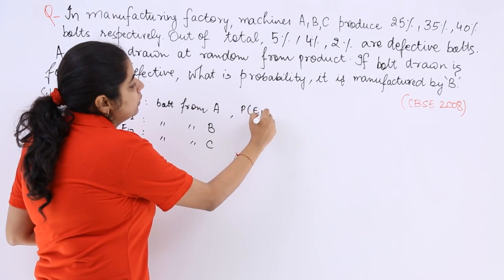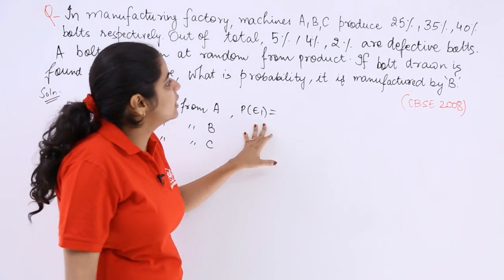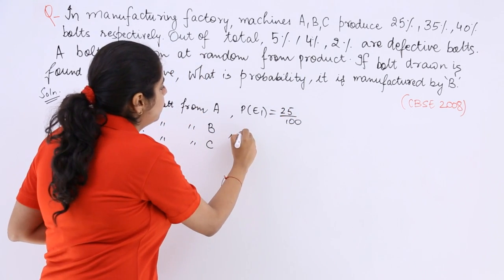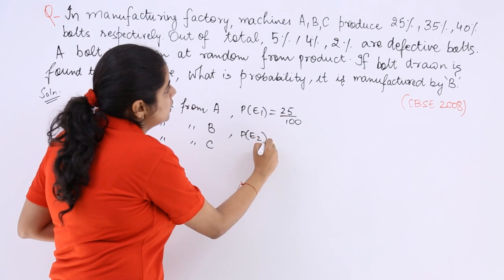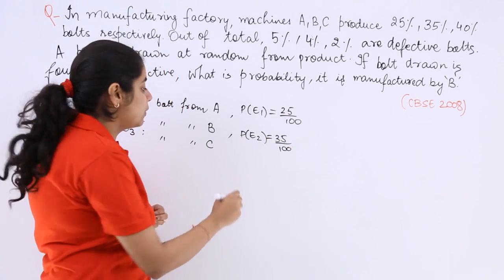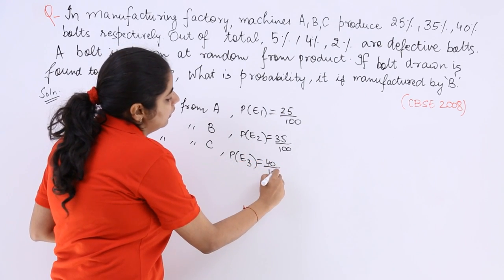Now what is probability of E1, that you are going to manufacture the product from machine A? The probability is 25 over 100. P(E2) equals 35 over 100. P(E3) equals 40 over 100.